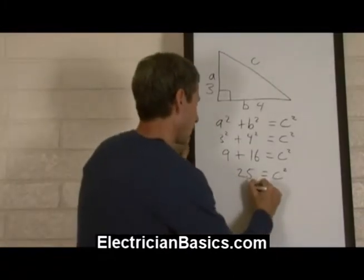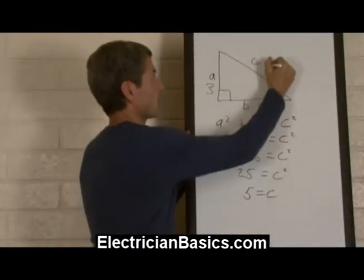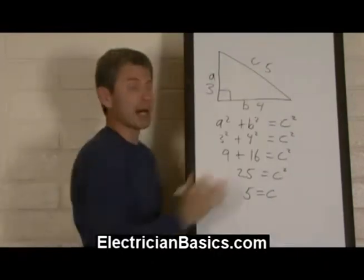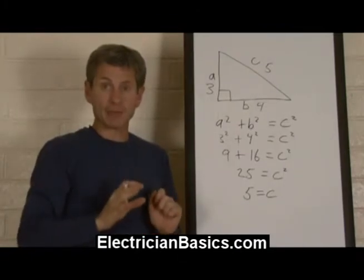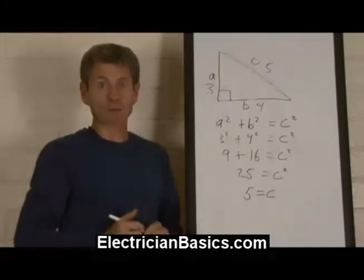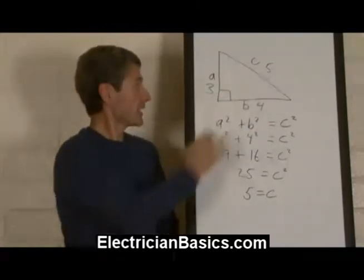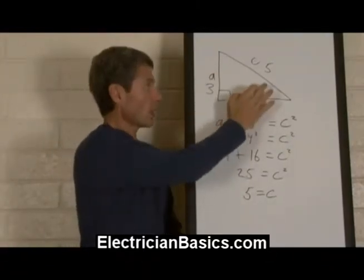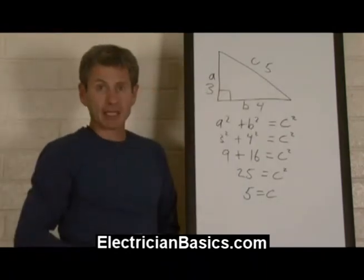So we have 5 is equal to c, so c becomes 5. Now of course, any triangle with the ratio 3-4-5 is a right triangle. So this could be 6-8-10 or 9-12-15.